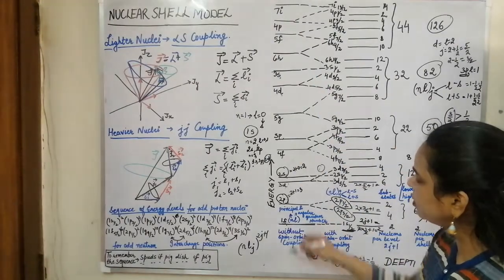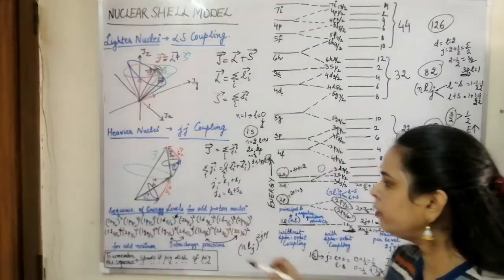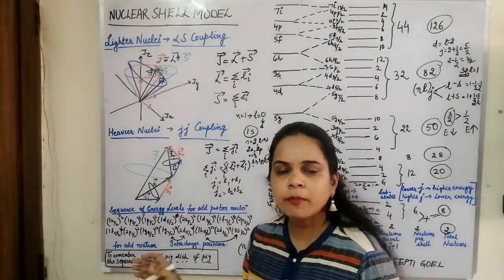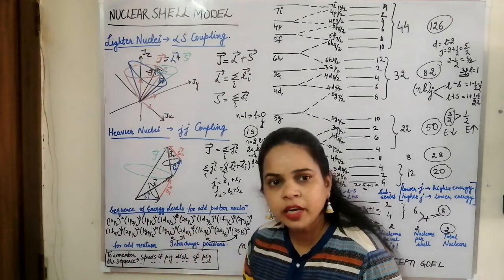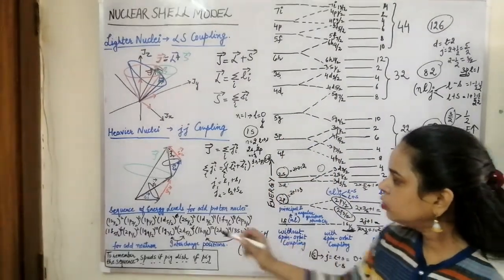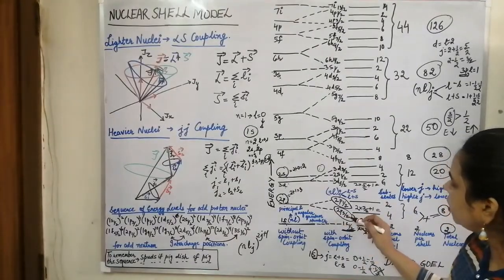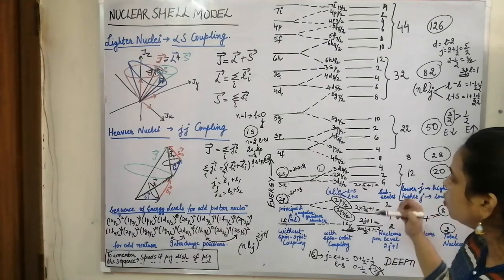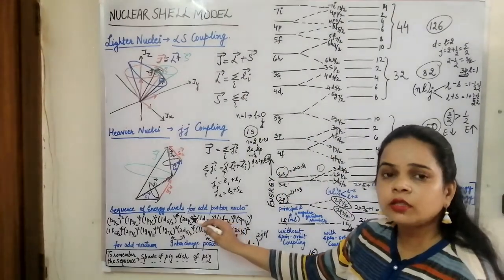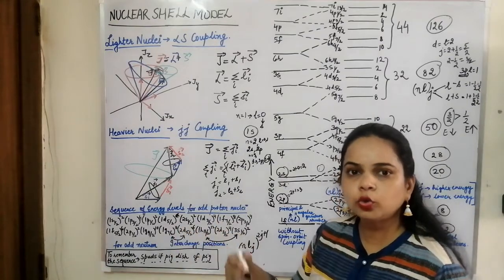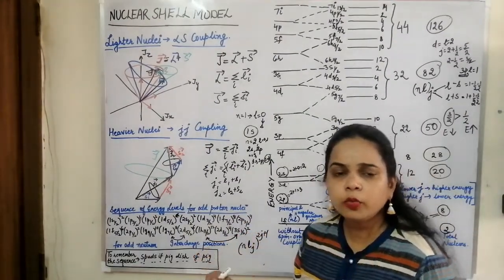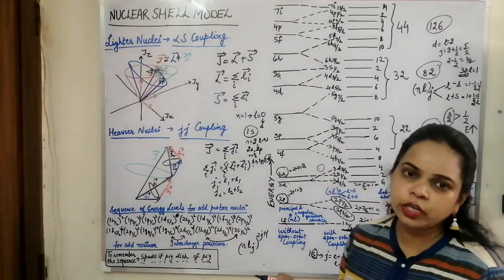Some authors use a different convention where the first time s, p, d, f, g appears it is labeled with N=1, and when repeated a second or third time it is labeled N=2, N=3. It is up to us which configuration to use. Either fill using the sequence with N as the principal quantum number, or use the convention where the first occurrence gets N=1. In both cases the superscript is 2J+1.